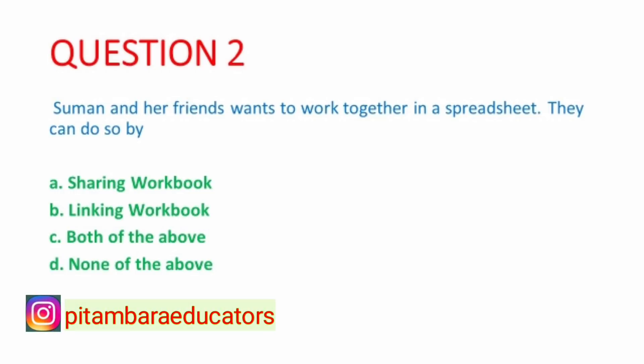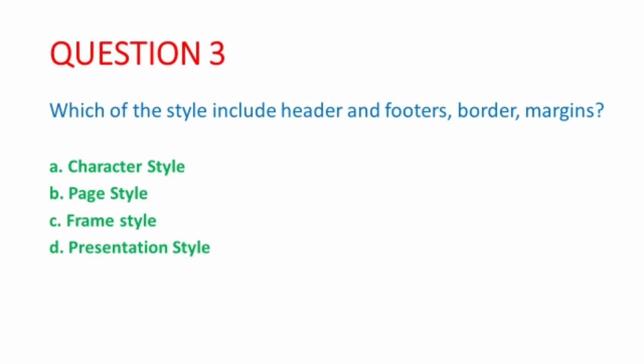Second MCQ is, Suman and her friends want to work together in a spreadsheet. They can do so by which feature? So this feature is sharing workbook. Next MCQ, which of the styles include header and footers, border, margins? So the correct option is page style.